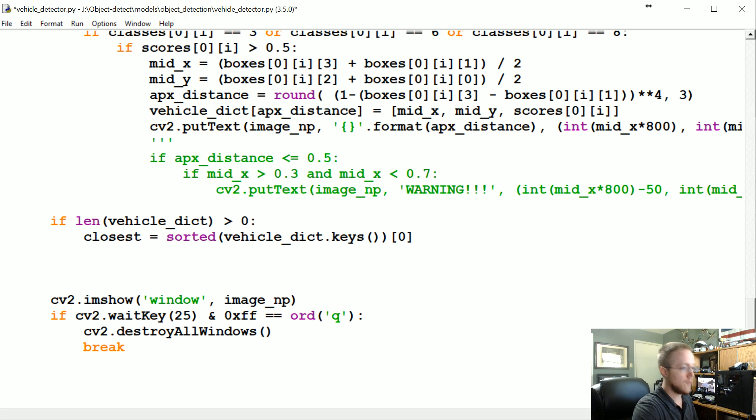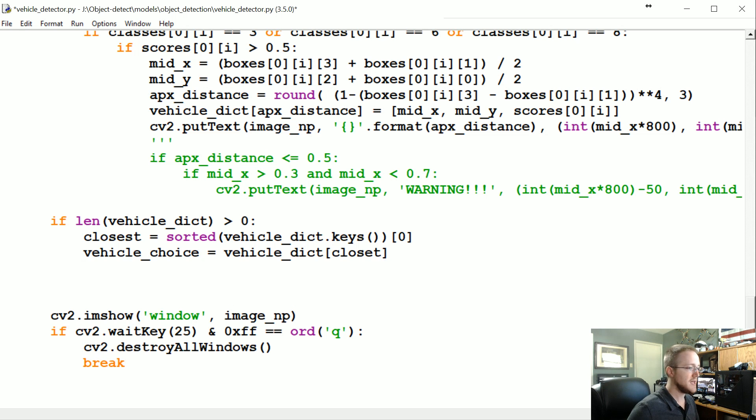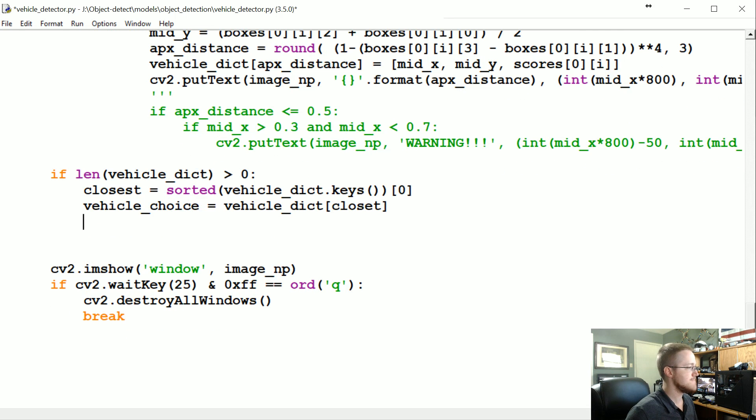So that'll give us the closest relative distance, which is also the key of the dictionary. Therefore the vehicle choice would be vehicle_dict of closest, with the key of closest rather. We could print out the choice, but I'm actually not going to do that, I think that's kind of spammy.